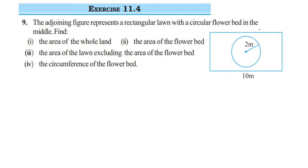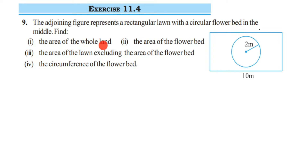Hey everyone, here is Exercise 11.4, 9th question. This is from the Perimeter and Area chapter of Class 7. The question is: the adjoining figure represents a rectangular lawn with a circular flower bed in the middle. Find: (1) the area of the whole land, (2) the area of the flower bed, (3) the area of the lawn excluding the flower bed, and (4) the circumference of the flower bed.